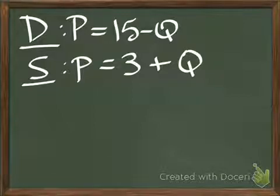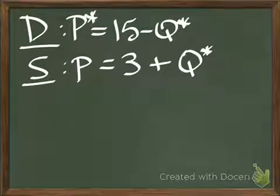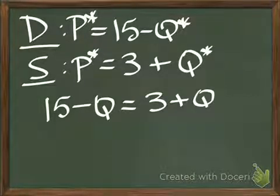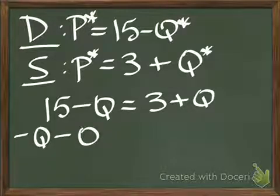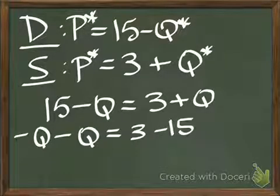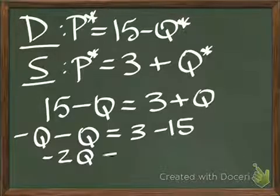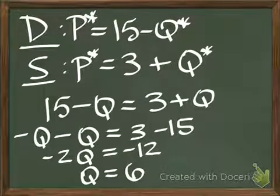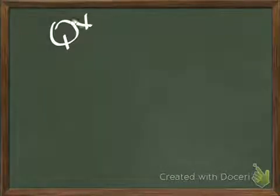Remember, market equilibrium is the price where quantity demanded and quantity supplied are equal. So, we're solving for the same thing here. These Qs are the same. In equilibrium, these prices are the same. So, I'm simply going to remove the P in one and put the other part of the equation. So, I'll have 15 minus Q equals 3 plus Q. So, I end up with negative Q minus Q equals 3 minus 15. So, negative 2Q equals negative 12, or Q equals 6. That is our equilibrium quantity is 6.